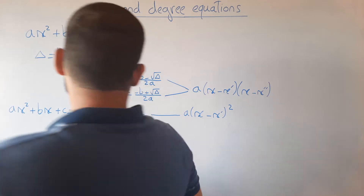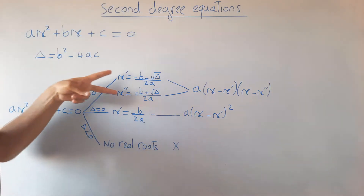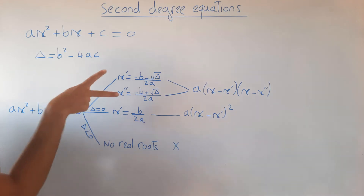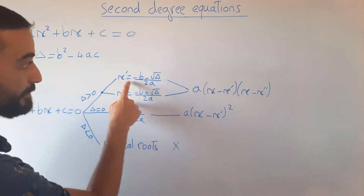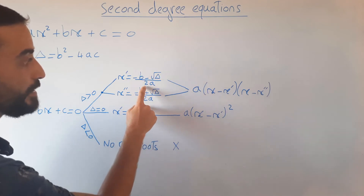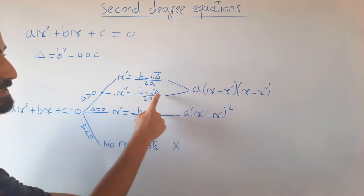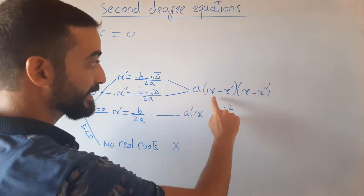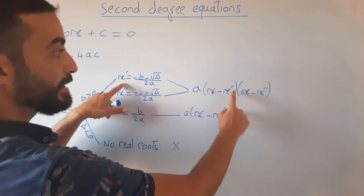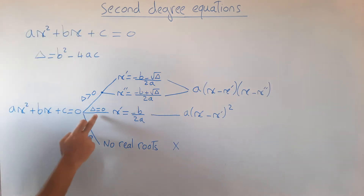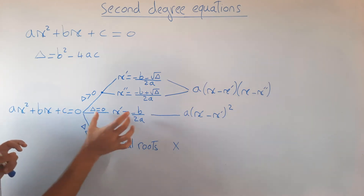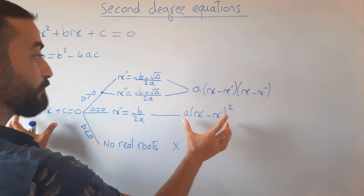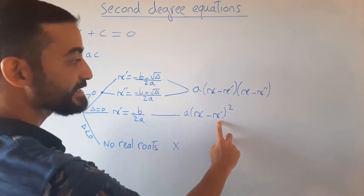If delta is positive, the equation has two distinct roots: x' equals (−b − √Δ) / 2a, and x'' equals (−b + √Δ) / 2a. The factorized form of this equation is a(x − x')(x − x''). If delta equals zero, the equation has a double root equal to −b / 2a, and the factorized form is a(x − x')².